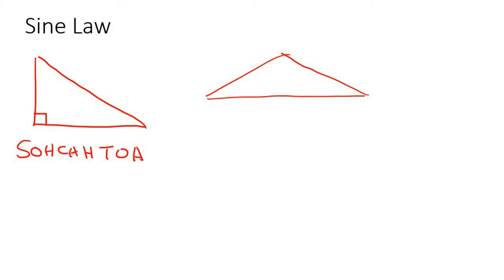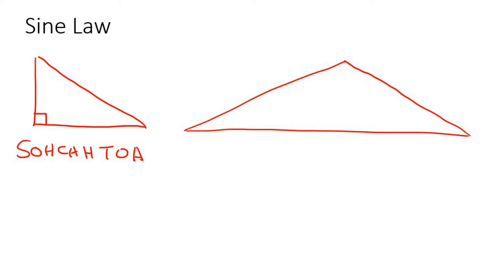So what if you have a triangle — let's do it a little bit larger. So it's not a 90 degree triangle. Well, then you cannot use SOH-CAH-TOA. SOH-CAH-TOA only works if it's 90 degrees. So then what we use is the sine rule.